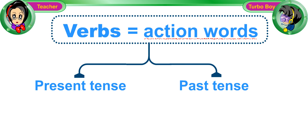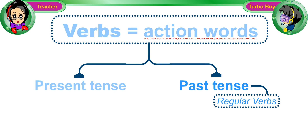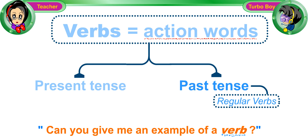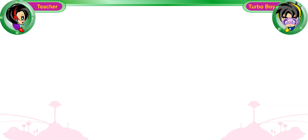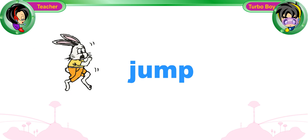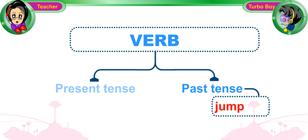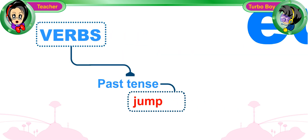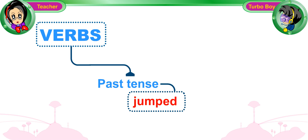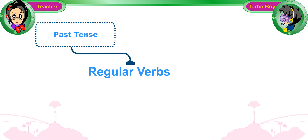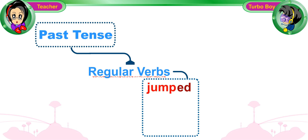Good! First, let's look at regular verbs. Turbo Boy, can you give me an example of a verb? Sure. How about jump? Yes, jump is a verb. We form the past tense of the verb jump by writing ed at the end of it. Verbs that can be changed into the past tense by adding ed are called regular verbs. Here is a list of regular verbs with ed added behind.